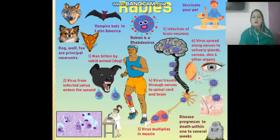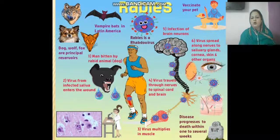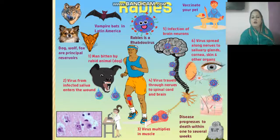The stages of rabies begin when a person is bitten by an infected animal like a dog. The virus travels from the infected animal to the human body, multiplies, and ultimately affects the nervous system. Principal animals that can cause rabies include bats, dogs, and wolves.